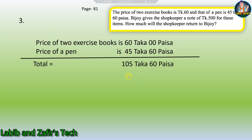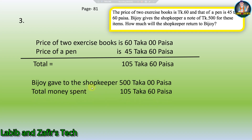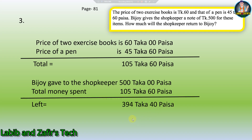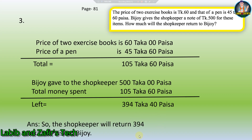We have to add these. 0 plus 60 is 60 Persha, and 60 plus 45 is 105 Taka 60 Persha. Bijoy gave the shopkeeper 500 Taka. Subtracting, the remaining amount is 394 Taka 40 Persha. The shopkeeper will return 394 Taka 40 Persha to Bijoy.